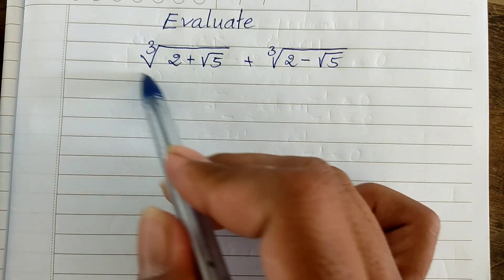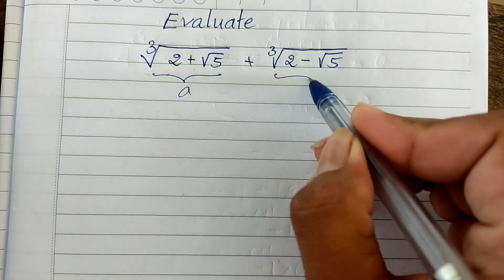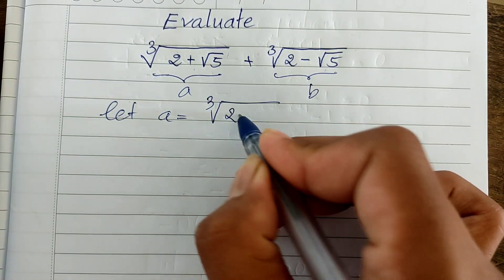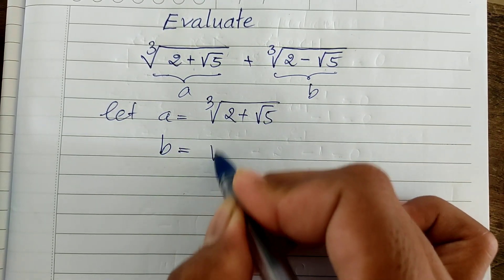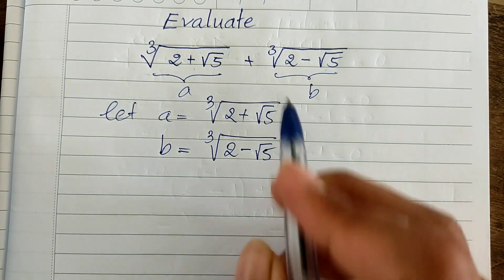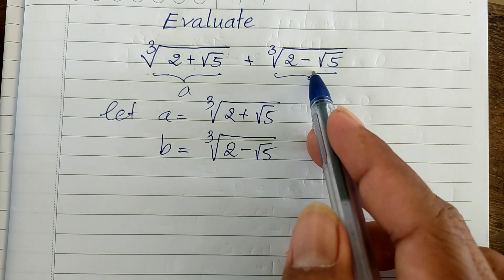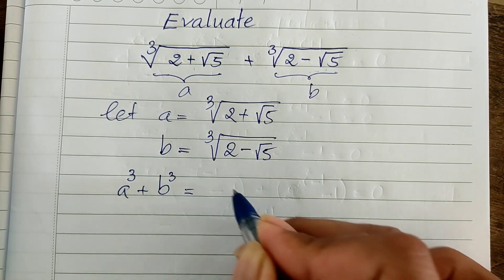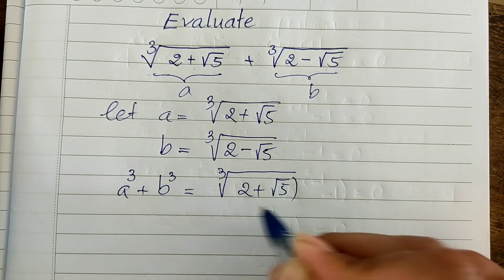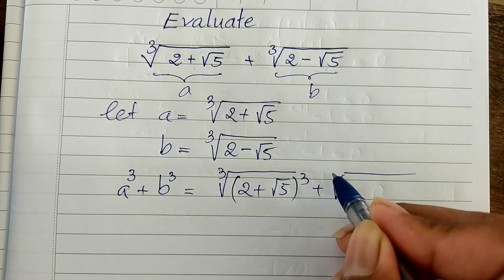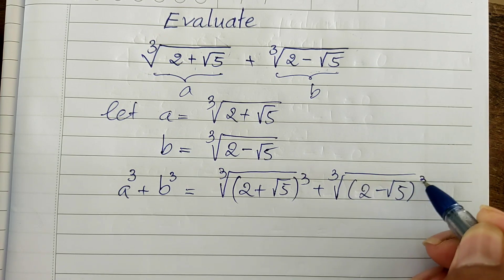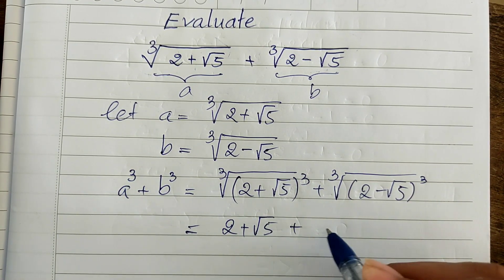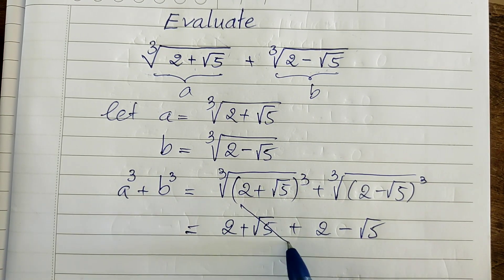Okay, this one part and this one part — I let this one be a and this one be b. So let a equal cube root of (2 plus square root of 5) and b equal cube root of (2 minus square root of 5). So this expression is a plus b. Now we know that a cubed plus b cubed equals cube root of (2 plus square root of 5) cubed plus cube root of (2 minus square root of 5) cubed. The cube root and power 3 cancel, giving us (2 plus square root of 5) plus (2 minus square root of 5), and the square root terms cancel.